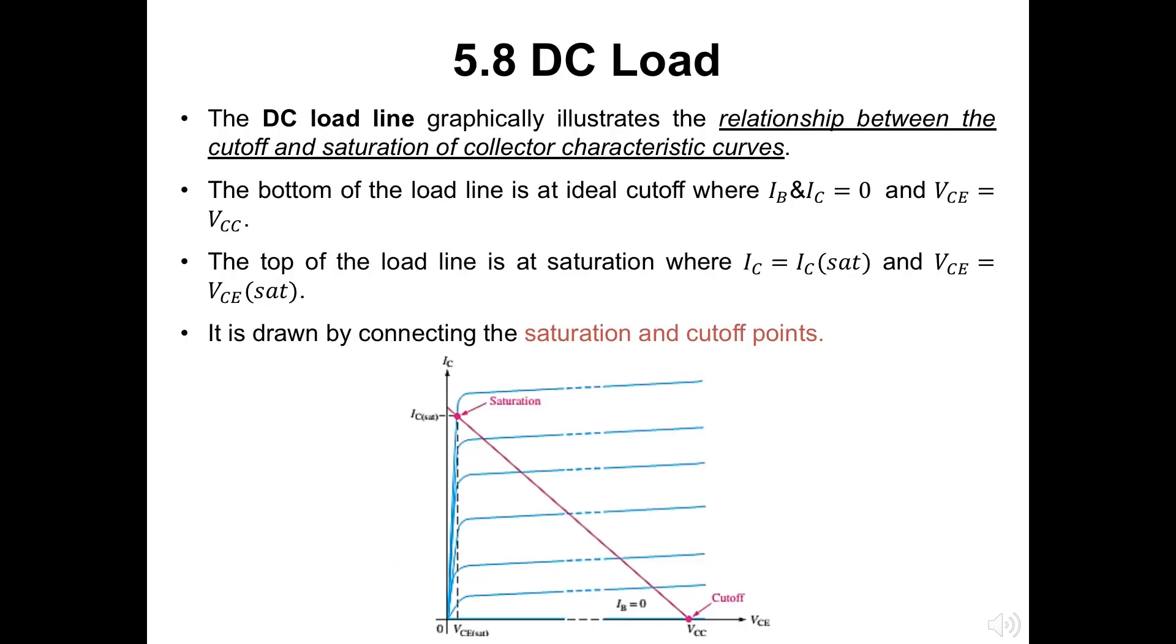Do you still remember about the load line analysis in Chapter 4? In Chapter 5, we will also discuss this load line for DC case transistor. The DC load line graphically illustrates the relationship between the cutoff and saturation of collector characteristic curves. The bottom of the load line is at ideal cutoff where IB and IC is 0 and the VCE is equal to VCC. On the other hand, the top of the load line is at saturation where IC is IC(SAT) and VCE is VCE(SAT). DC load line is drawn by connecting the saturation and cutoff points.